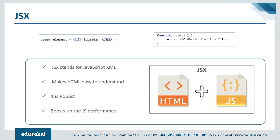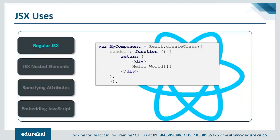JSX stands for JavaScript XML. It's an XML/HTML-like syntax used by React. This syntax extends ECMAScript so that XML/HTML-like text can coexist with JavaScript React code. It is used by preprocessors to transform HTML-like syntax found in JavaScript files into standard JavaScript objects. With JSX, instead of just embedding JavaScript into HTML, we can embed HTML into JavaScript as well. This makes the HTML code easy and boosts JavaScript's performance, making our application robust.